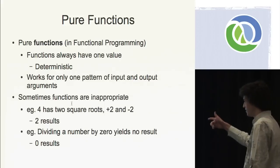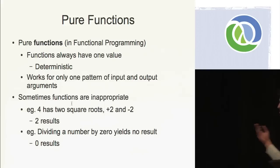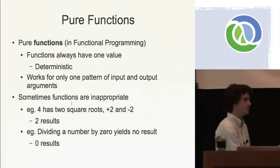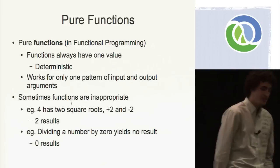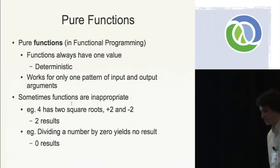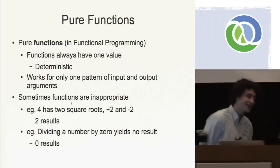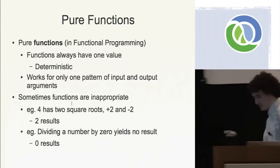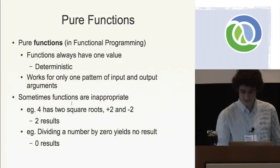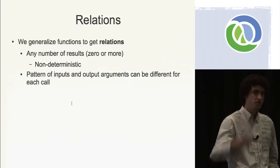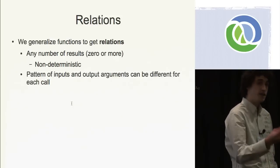Look at this interesting problem. Normally, when we have a square root function in a language, we get the primary root. But four has two square roots — positive two and negative two. To represent that return value with a function, we have to return a list of values, which is kind of a hack. And even more interesting is that if you divide a number by zero, it really yields no result. Another kind of hack is to throw an exception. These are the types of things that are interesting when we look at logic programming, because when we introduce a relation, a relation can return any number of results — zero or more. That behavior is known as non-deterministic behavior.